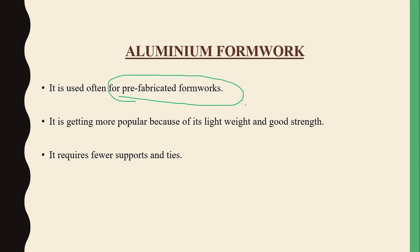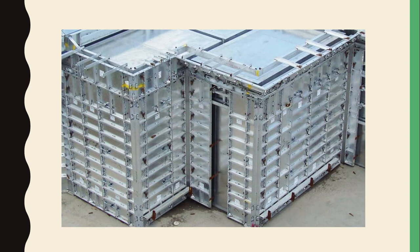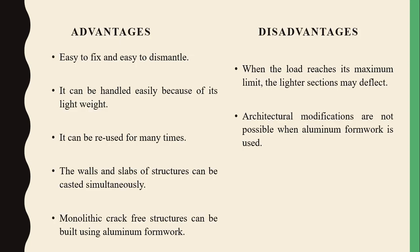Aluminium formwork uses prefabricated aluminium sheets. It is most widely used because of its lightweight structure and good strength, and is supported with supports and ties. Advantages: easy to fix, fabricate, and dismantle; light in weight for easy handling; reusable many times; mostly suitable for walls and slabs which can be cast simultaneously; and monolithic crack-free structures can be built. Disadvantages: lighter sections may deflect when maximum load is reached, and architectural modifications are not possible.